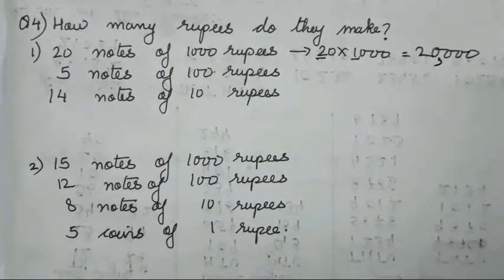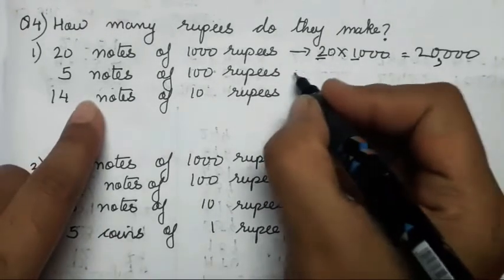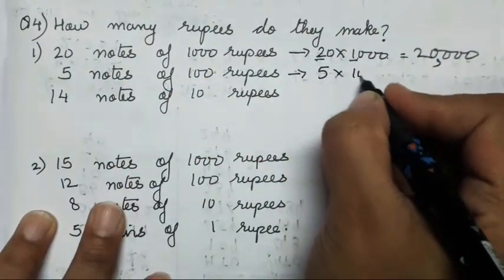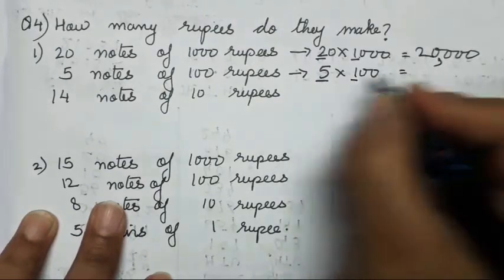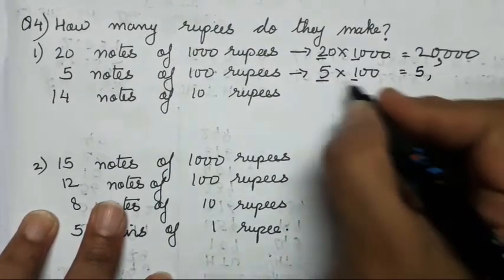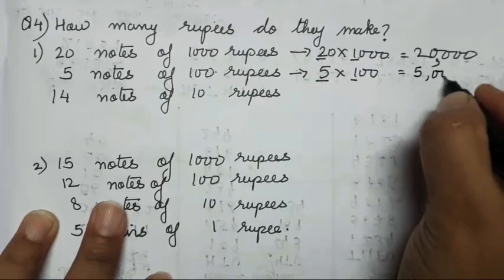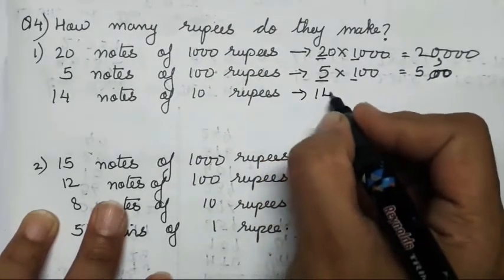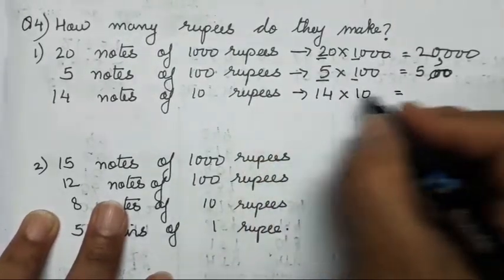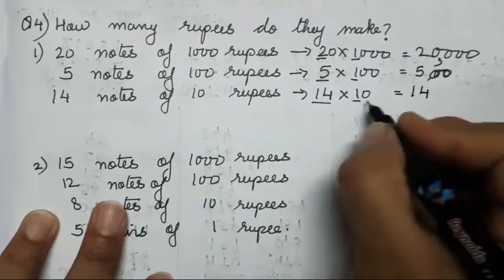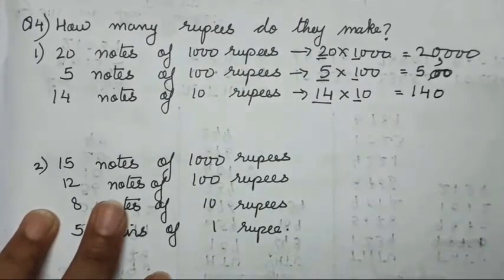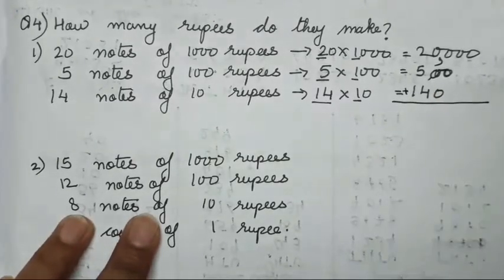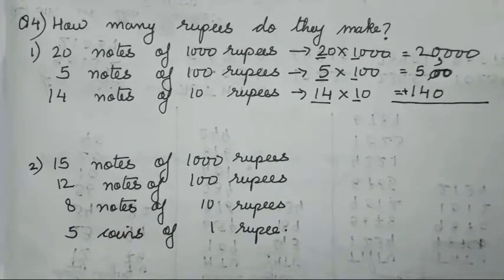Next is going to be 5 notes of hundred rupees — so 5 into 100: five into one is five and two zeros — that is 500. Next is going to be 14 into 10 — so 14 into one is 14 and one zero — that is 140. Now to find how many rupees they make, we have to write it in the form of an addition sum.